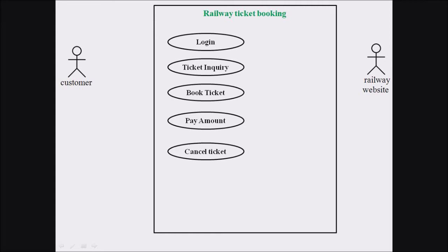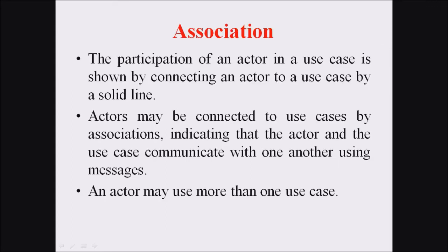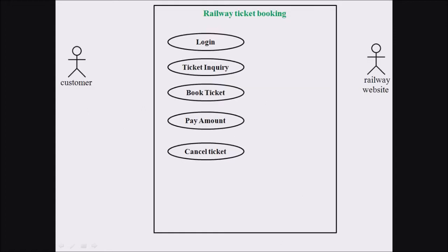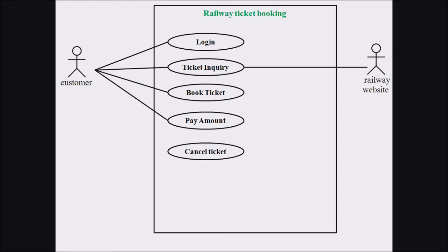Associations represent the participation of actors in a use case and are connected by lines. The customer is associated with login, ticket enquiry, book ticket, pay amount, and cancelling. The railway website is associated with ticket enquiry, book ticket, payment amount, and cancel ticket.